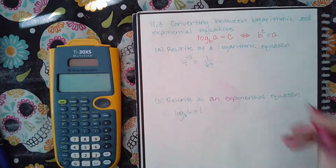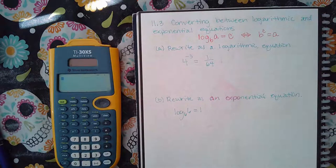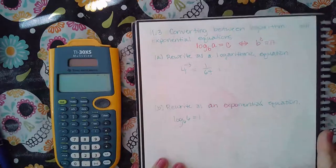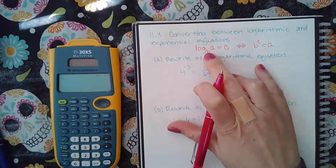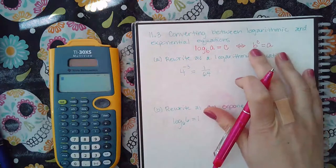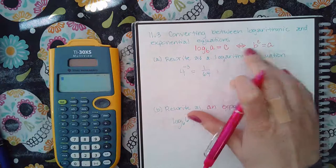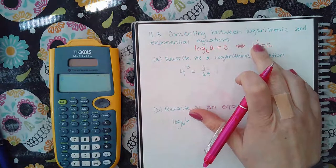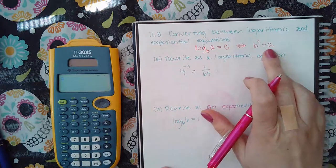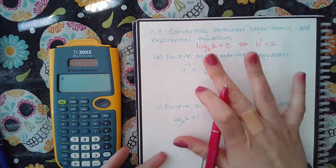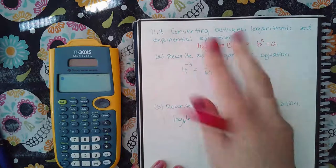For us, they want us to be able to practice going back and forth between the two forms. This is the logarithmic form, and in the exponential form, notice that even when this is called the base of the logarithm, it's also the base of the exponential. Notice that the logarithm is equal to the exponent, and that's the exact same place where it's placed. This is in the exponent position, and then this argument ends up going to the other side.